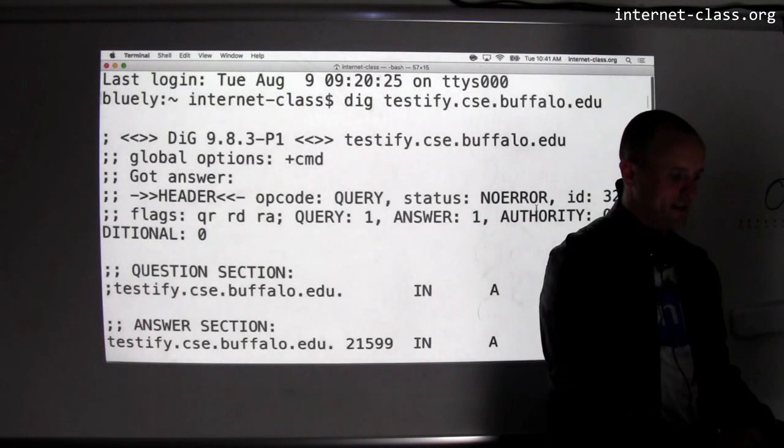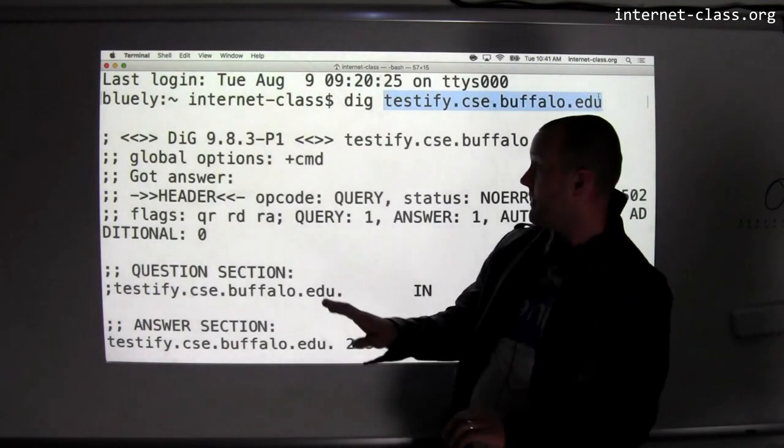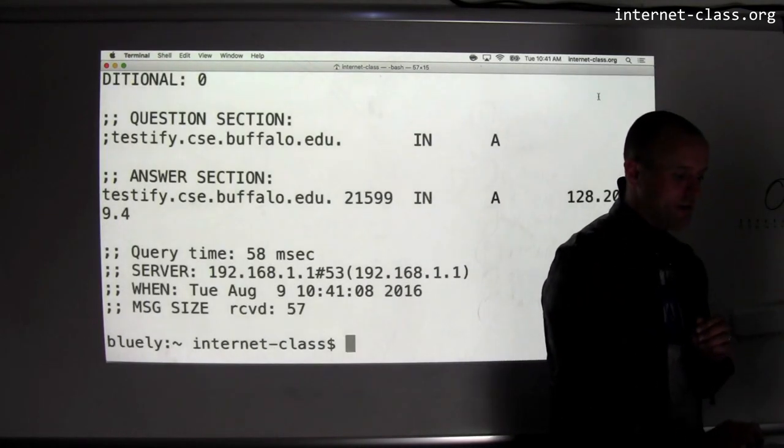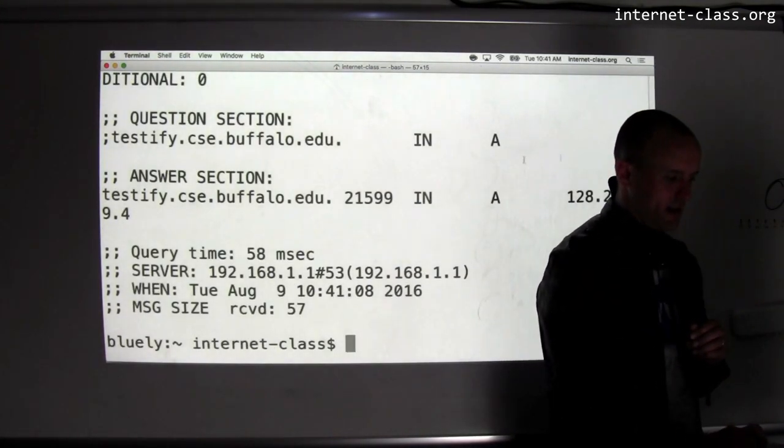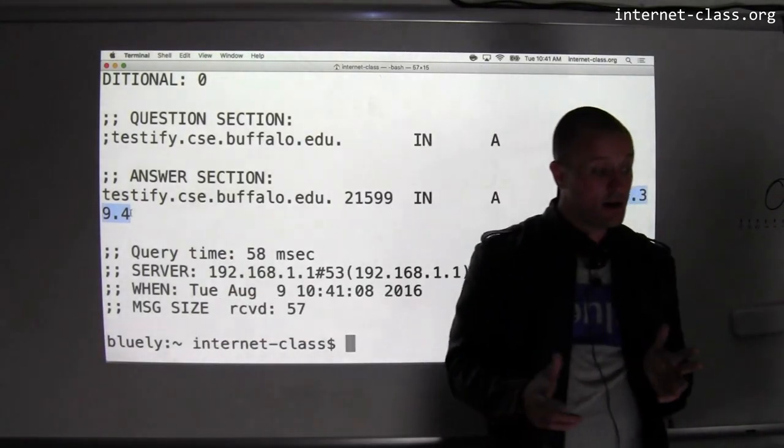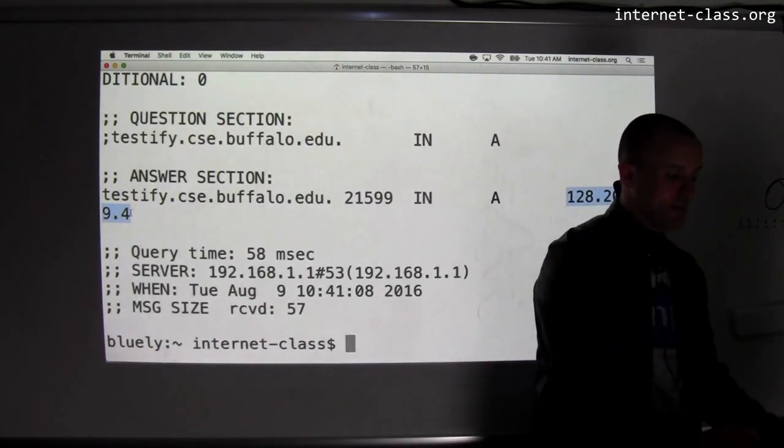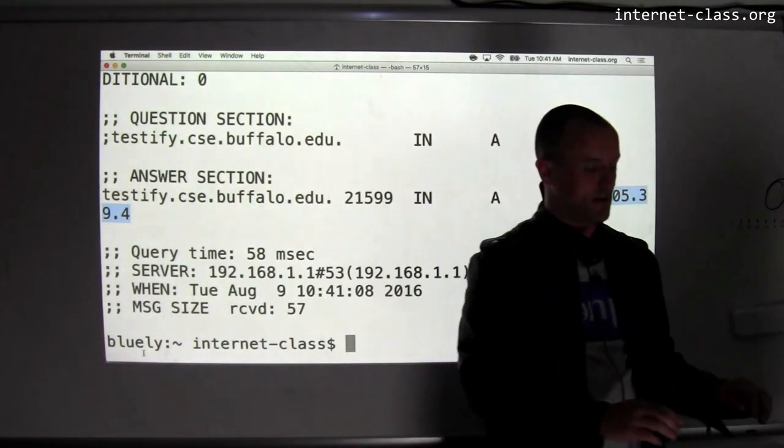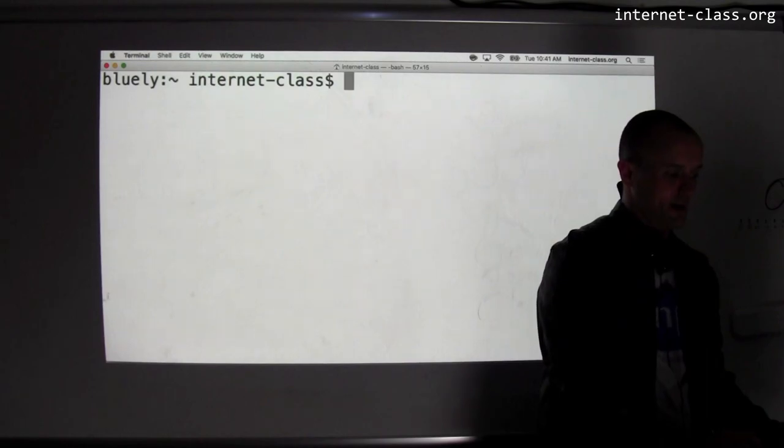So what I did, this is the machine that I use at work. It's called Testify.csc.buffalo.edu. That's a human readable name. That's something that I can remember. I just used this little tool to translate it into a machine readable name. Fortunately, this is wrapped a little bit. But you can see that the IP address here is 128.205.39.4. This may not mean much to you yet, but this tool exists and is something that you can use on most modern computers or in a variety of different environments.